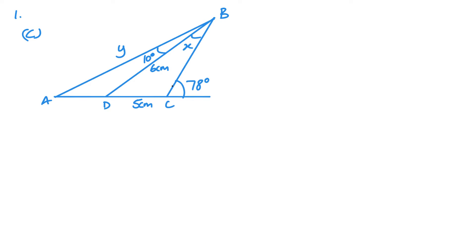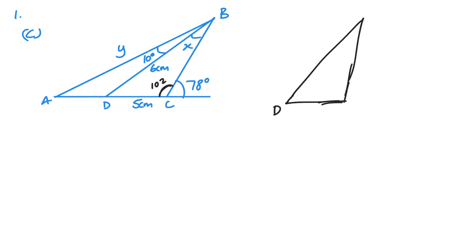Approaching this, let's first start by working out some angles that I know. This one's going to be 180 minus 78, so 102. And that will help me out straight away. I'm going to sketch that part of the triangle: D, C, and B — so B to C to D. We know this is 102, that's X, this is 5, and this is 6. We can see from here that I can use the sine rule to solve this.